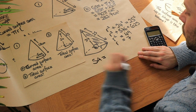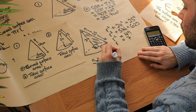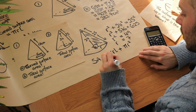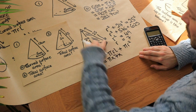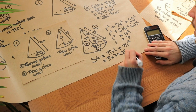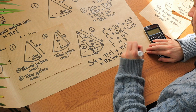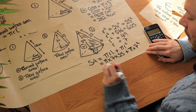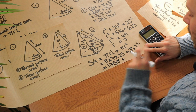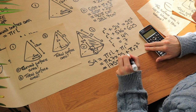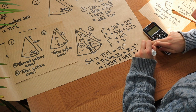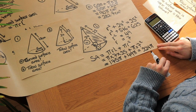Now we have everything to work out the total surface area. SA equals pi r l plus pi r squared. That's pi times 7 times 25, plus pi times 7 squared. Simplifying: 7 times 25 is 175, so it's 175 pi, plus 49 pi. Adding those together gives 224 pi. We could always convert that to a decimal by pressing the SD key.